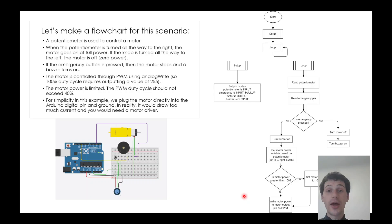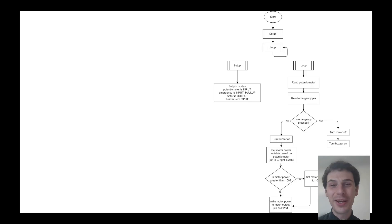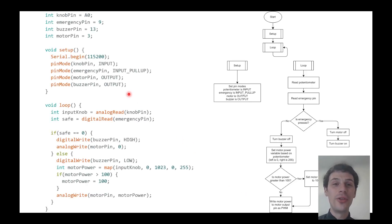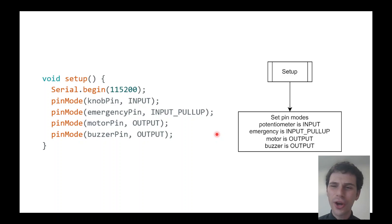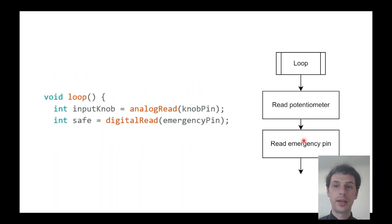You might be wondering how that relates to the code. Well, here is one I prepared earlier. Here is some code that matches this flowchart. I will just whip through it pretty quickly because the focus of this video is flowcharts, not actually teaching the code. Here's my setup function that sets the pin modes. Here is the start of my loop function. I need to read the potentiometer, read the emergency pin, save them in a variable somewhere.